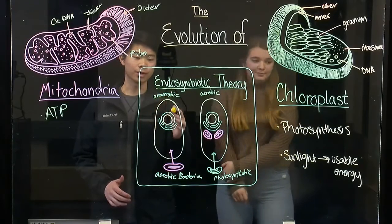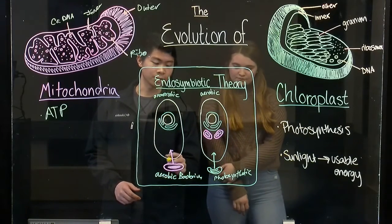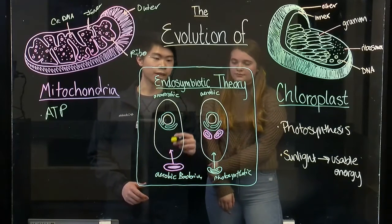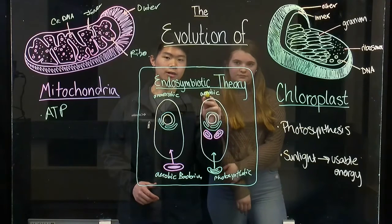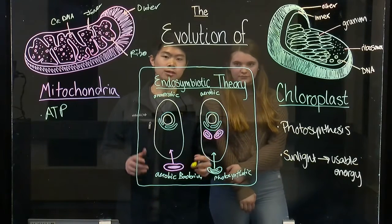Here we have an anaerobic ancestral eukaryote that engulfed an aerobic bacterium, which is the ancestor to the mitochondria. Once it's done this, it now becomes an aerobic eukaryote with mitochondria in it for its cellular processes.